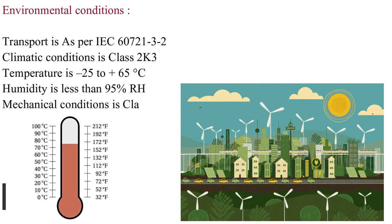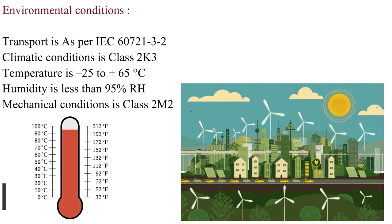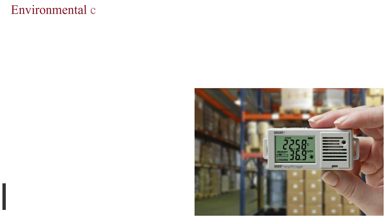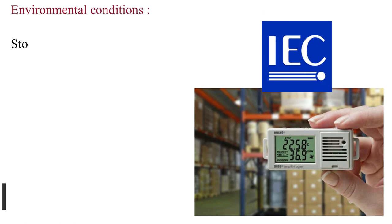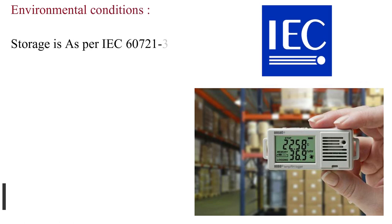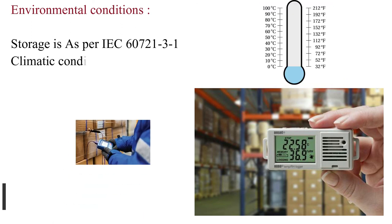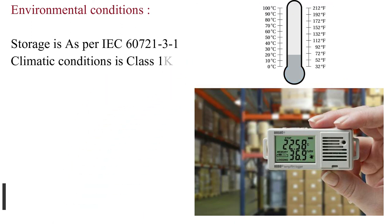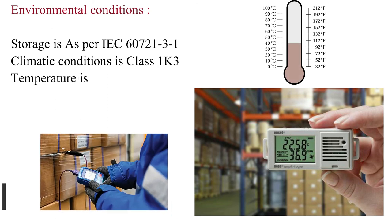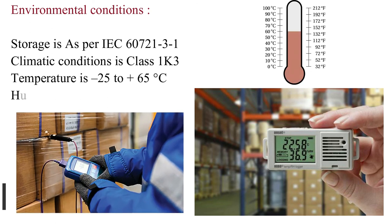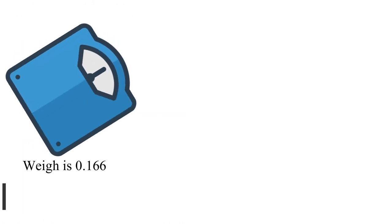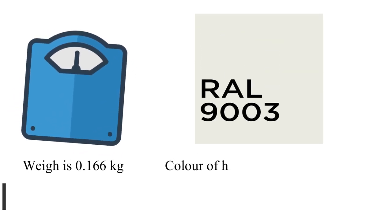Storage is as per IEC 60721-3-1. Climatic conditions is class 1K3. Temperature is -25 to +65 degrees Celsius. Humidity is less than 95% RH. Weight is 0.166 kilograms. Color of housing front is RAL 9003.